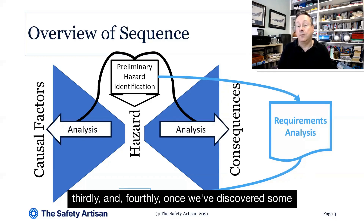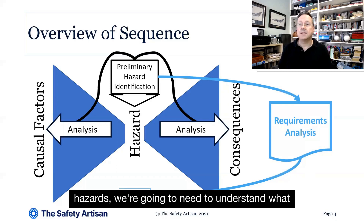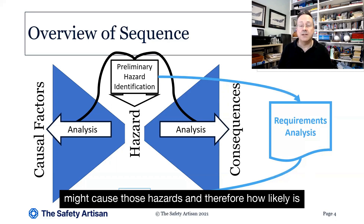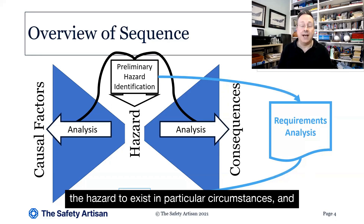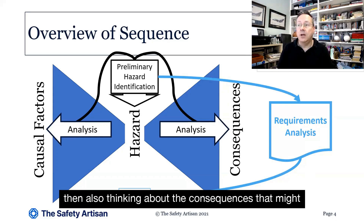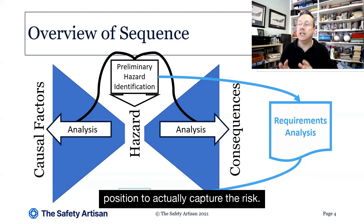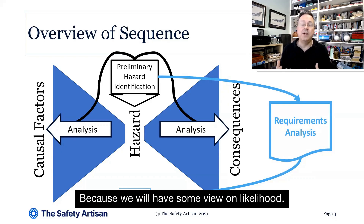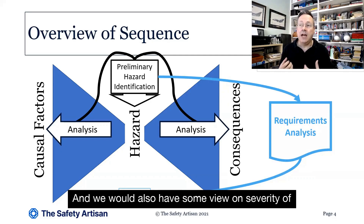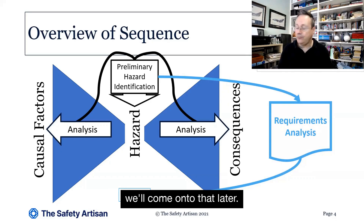So thirdly and fourthly, once we've discovered some hazards, we're going to need to understand what might cause those hazards, and therefore how likely the hazard is to exist in particular circumstances. And then also thinking about the consequences that might arise from a hazard. Once we've explored those, we will be in a position to actually capture the risk, because we will have some view on likelihood and also on the severity of consequences.